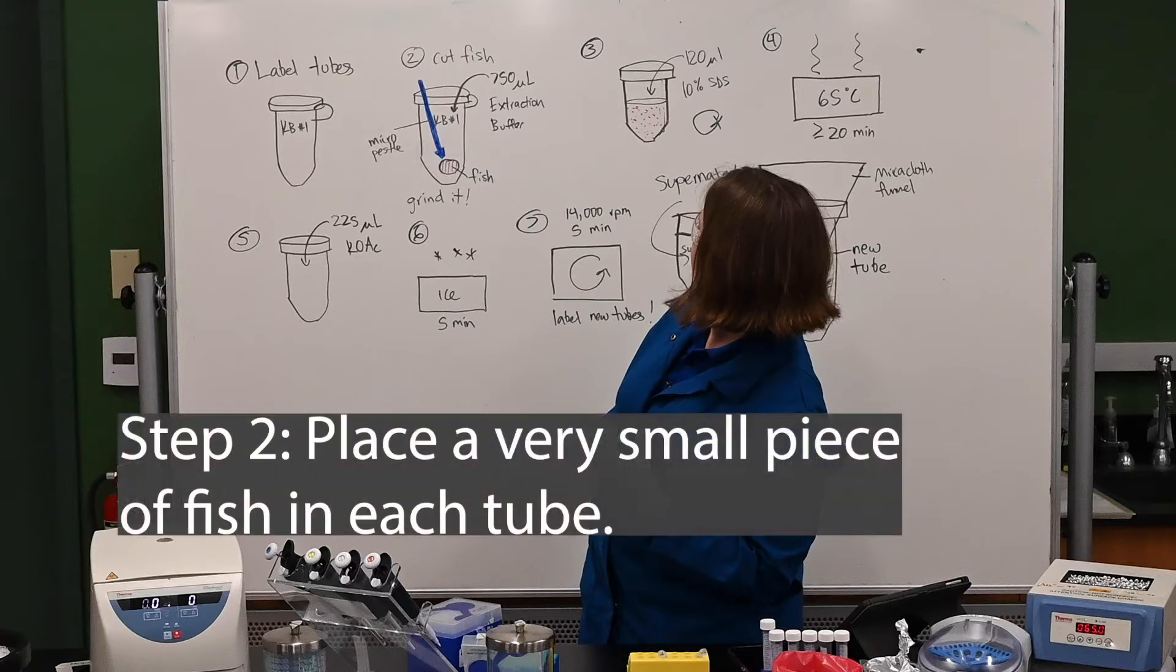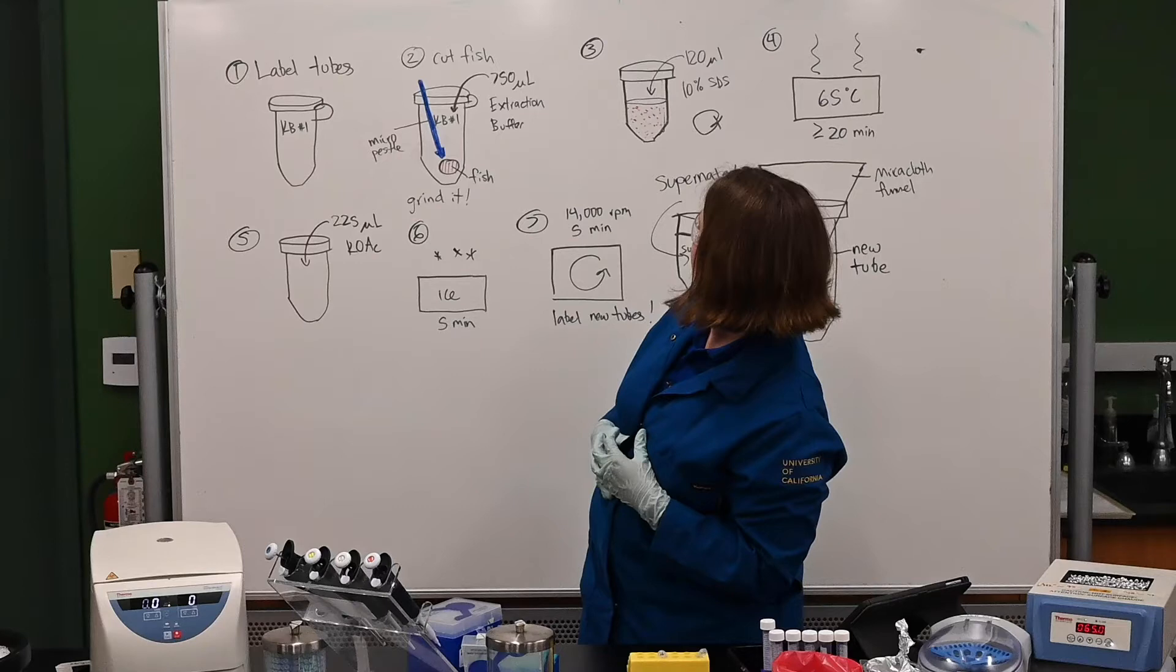Step two, you're going to cut a very small piece of fish and place it in each tube. Next I'm going to add 750 microliters of DNA extraction buffer to each tube.